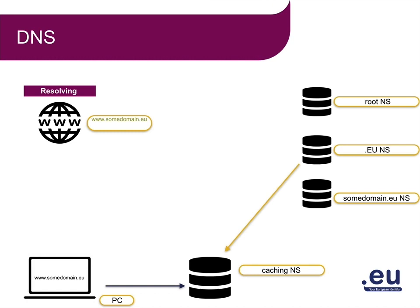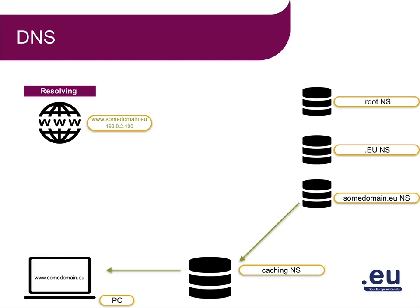In step 3, the caching Nameserver asks the Nameserver of somdomain.eu for the IP address of www.somdomain.eu, and now it's given back the IP address 192.0.2.100. In the final step, step 4, the caching Nameserver puts this information in its database and sends the result to the initial requester — the PC. The PC gives the information to the browser, and the browser connects to the website.